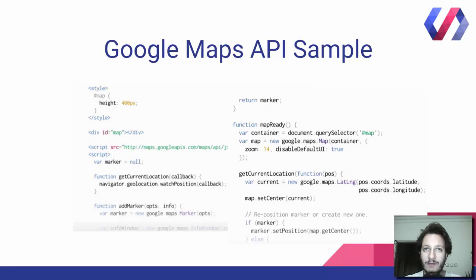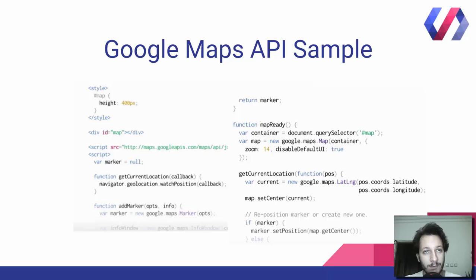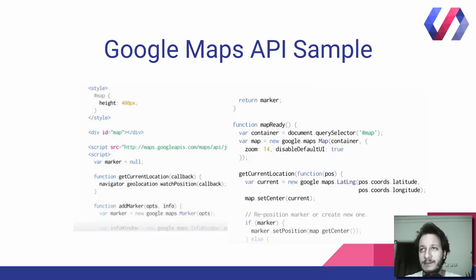Before we dive into the implementation of the Google Map custom element, let's have a look at a sample code which we would need to write to integrate Google Maps. We would need to write a little bit of CSS, create a map container, load the JavaScript library, do some geolocation and a lot of other stuff for just a simple functionality. I don't even mention testing, crashing bugs, etc.